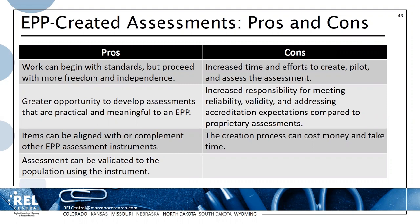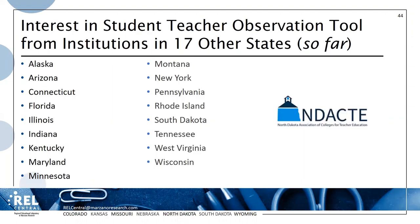Cons include increased time and effort, more responsibility for the process, and some lack of confidence in validity, reliability, and statistical analysis — which is where you need to seek expertise, as Gary mentioned with the Lawshe method. The creation process can cost money and take time. We've shared about our student teaching assessment instrument at AACTE conferences and at the state level, and people from other states have expressed interest in our observation tool.